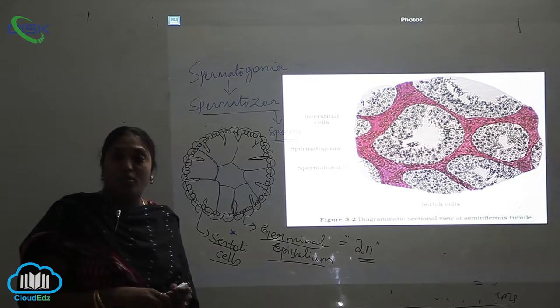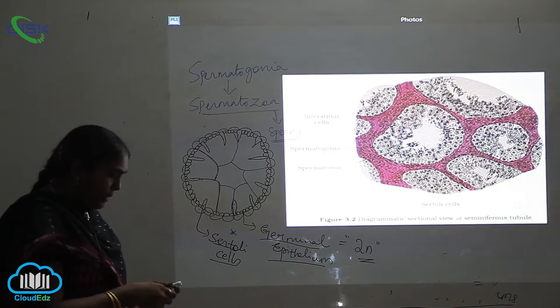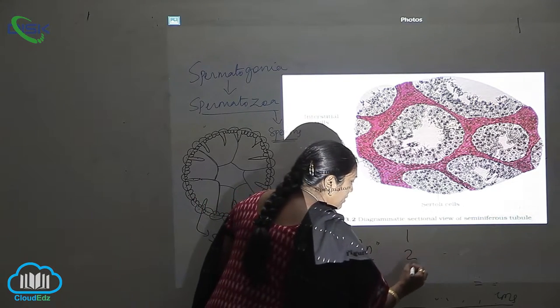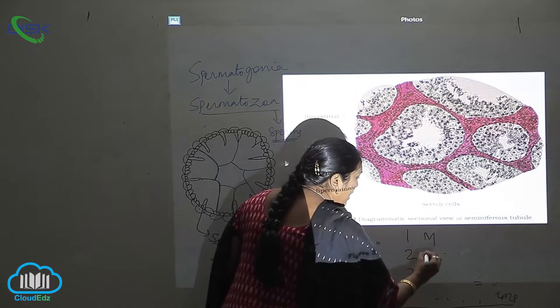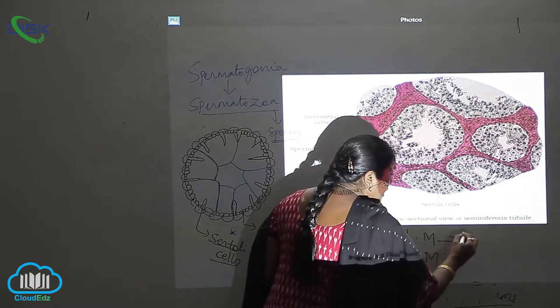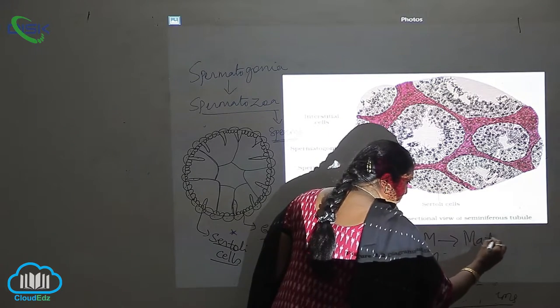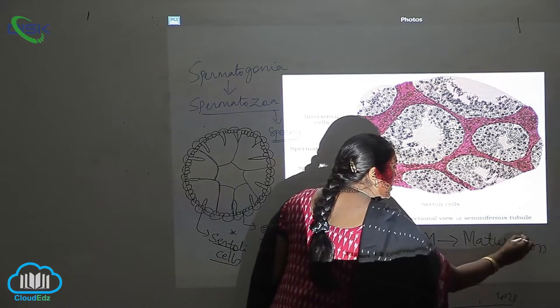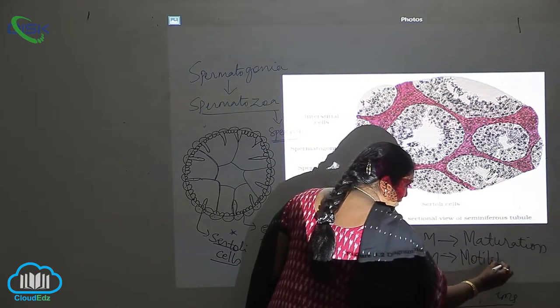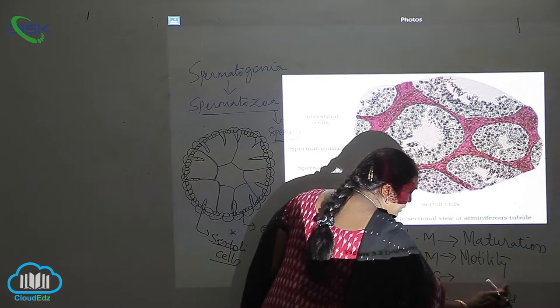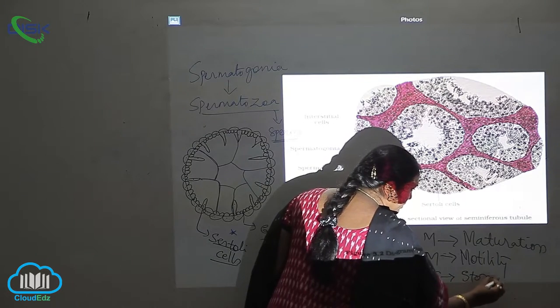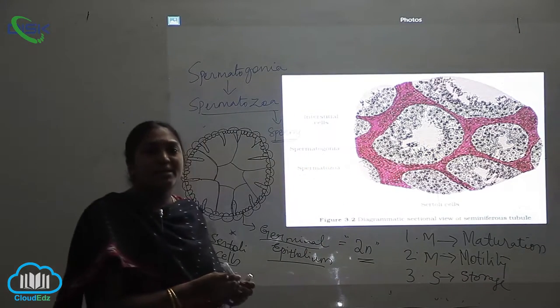What is the function of this particular system? You can remember it as MMS. What is MMS? First is maturation, next is motility, and the third is storage: maturation, motility, and storage.